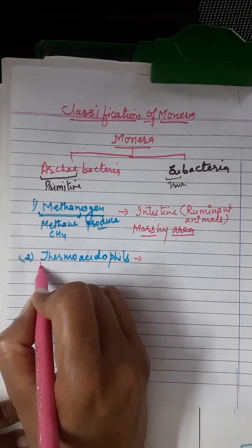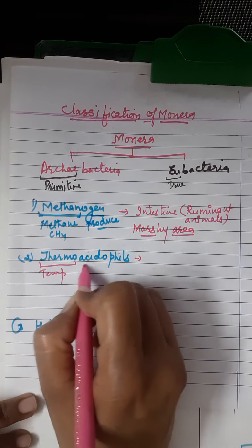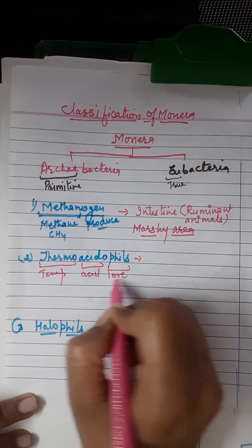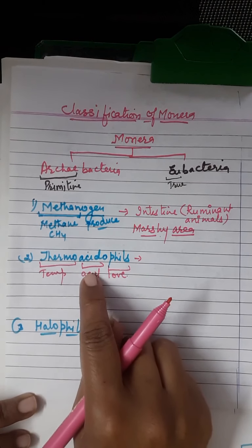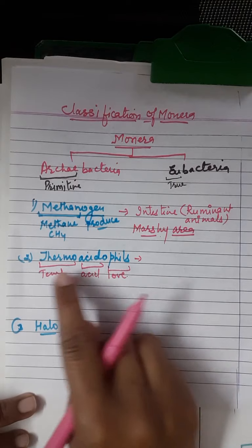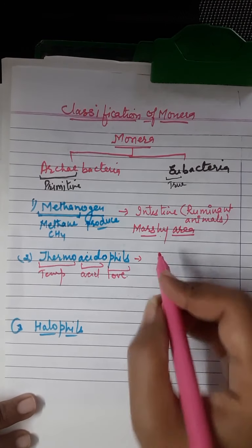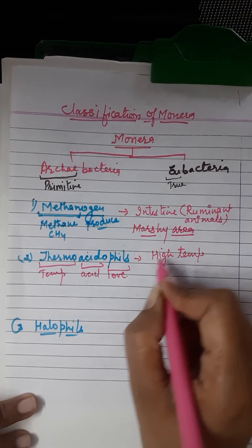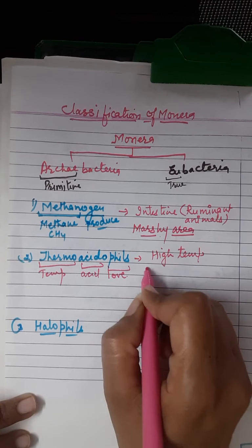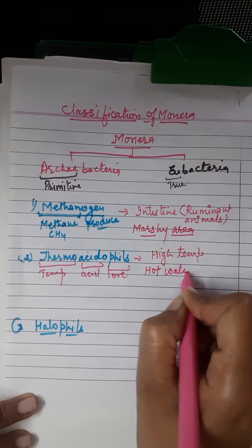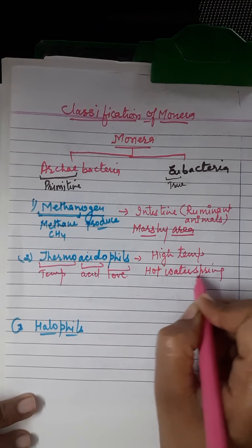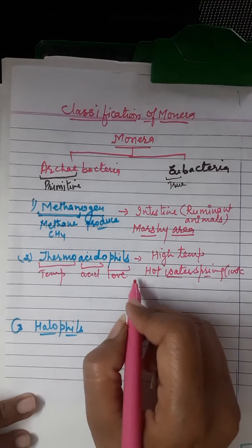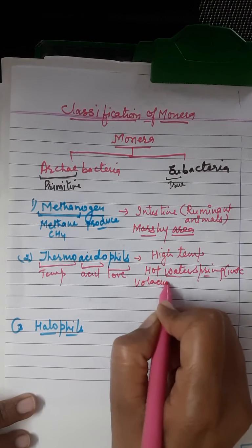The second type of Archibacteria is Thermoacidophils. 'Thermo' means temperature, 'acid' you know, and 'phils' means love. They love to live at very high temperatures as well as in acidic medium. They are present in hot water springs — sulfur springs where water temperature is about 100 degrees Celsius.